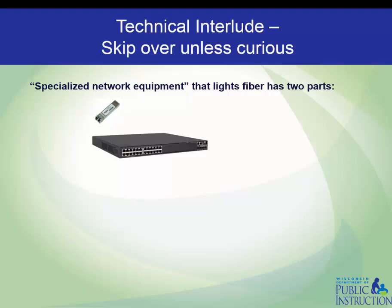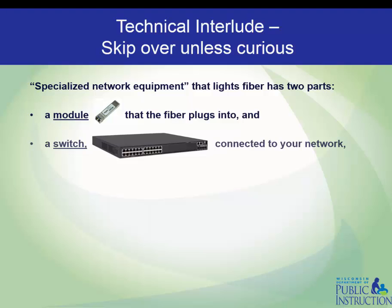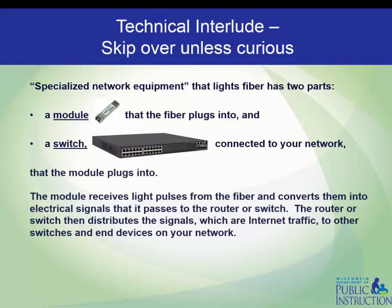Specialized network equipment that lights fiber has two parts: a module that the fiber plugs into, and a switch connected to your network that the module plugs into. The module receives light pulses from the fiber and converts them into electrical signals that it passes into the switch. The switch then distributes the signals, which are internet traffic, to other switches and end devices on your network.